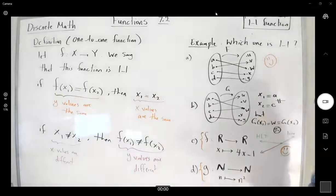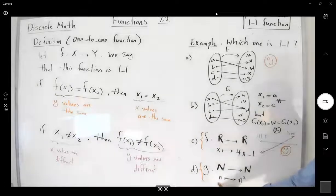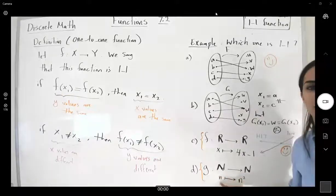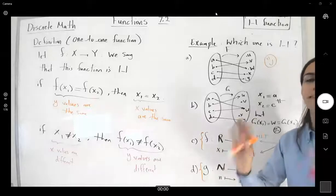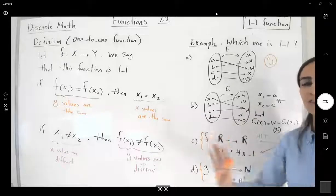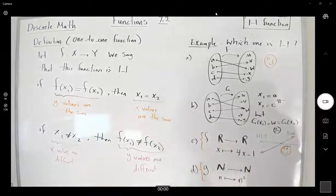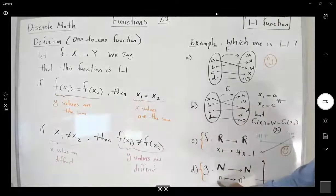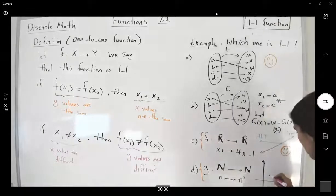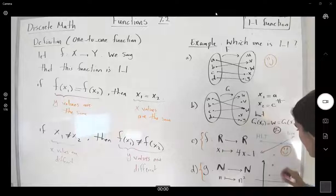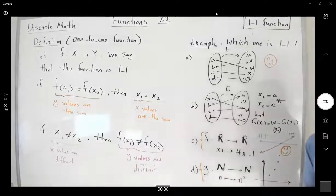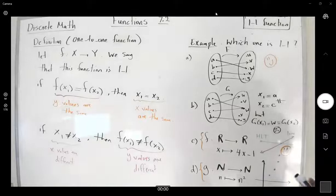What about function D? Be careful about the domain — it says the domain is N. So your input values are not negative. Since you don't have negative values, you don't go to the left-hand side of the graph. If you plug in 1 you get 1, plug in 2 you get 4, and so on. Does it pass the horizontal line test? Of course — so this is another example of a one-to-one function.